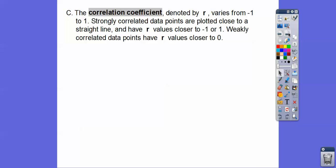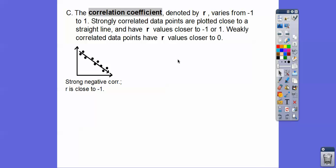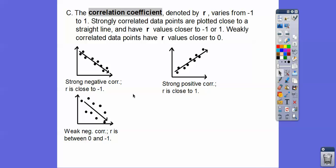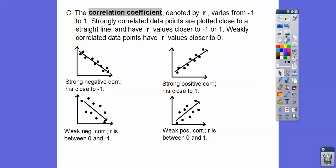Weakly correlated data points have an r value close to 0. Here's a strong negative correlation — all these points are close to that line going down, so r is close to negative 1. Here's a strongly positive correlated one. Here's a weak negative correlation where the points aren't very linear, so r is somewhere between 0 and negative 1, maybe like negative 0.5. And a weak positive correlation has r somewhere between 0 and 1, probably close to 0.5.